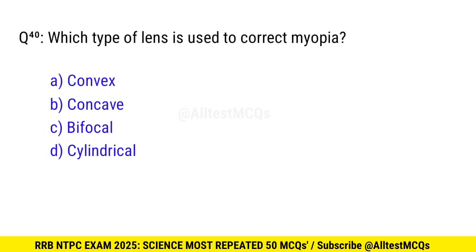Question 40. Which type of lens is used to correct myopia? Correct option is B, concave.